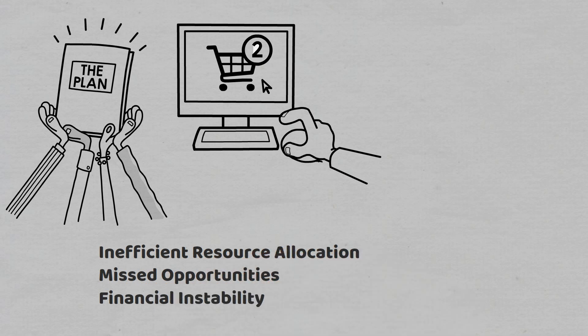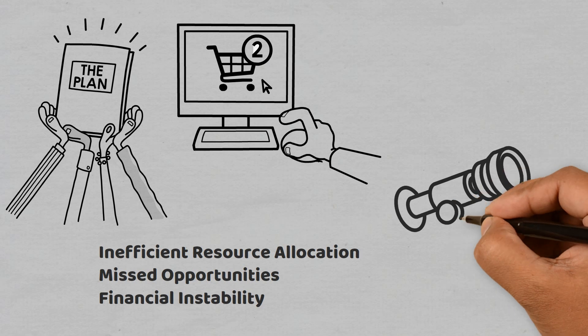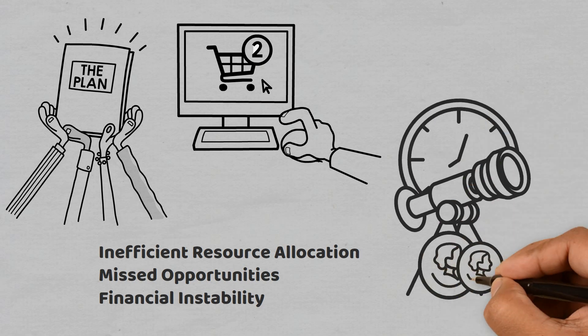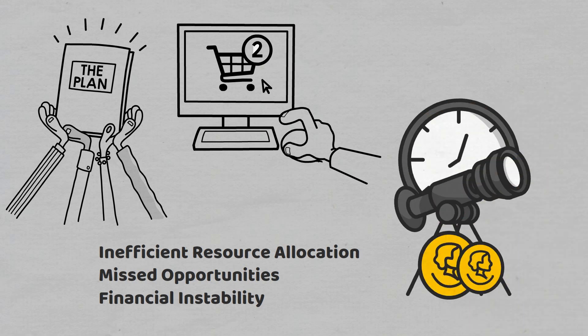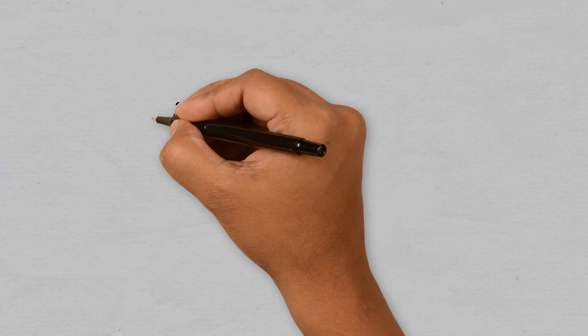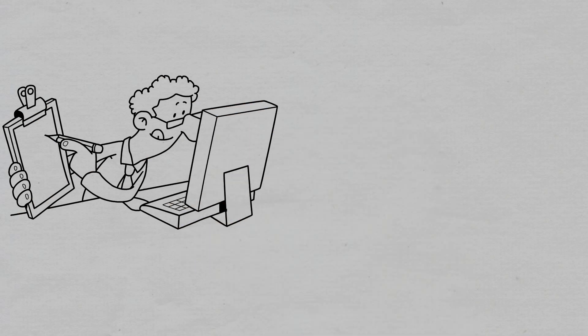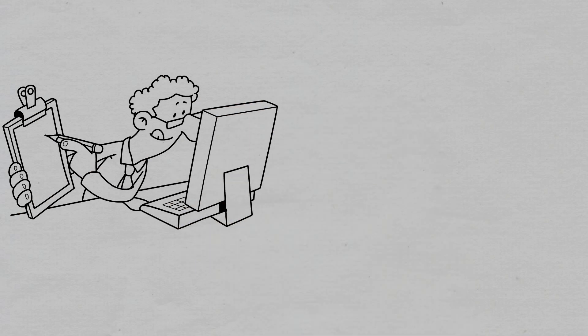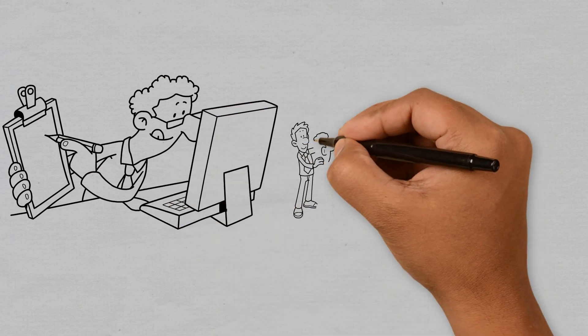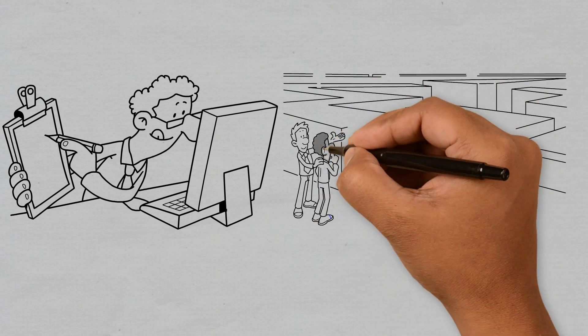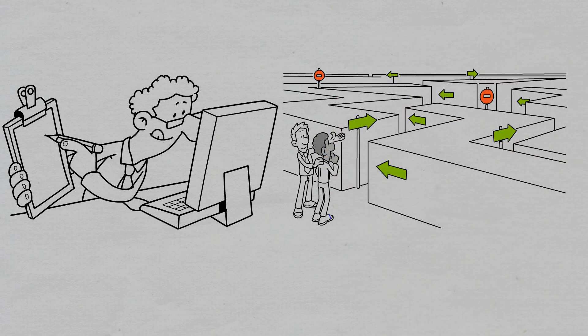To avoid this pitfall, it's crucial to create a financial plan that outlines your short-term and long-term financial goals, a budget, and a strategy for achieving them. Regularly reviewing and adjusting your plan is equally important, as it allows you to adapt to changes in your life and financial situation. A financial plan serves as your roadmap to financial success, helping you stay on course and make informed decisions that align with your objectives.